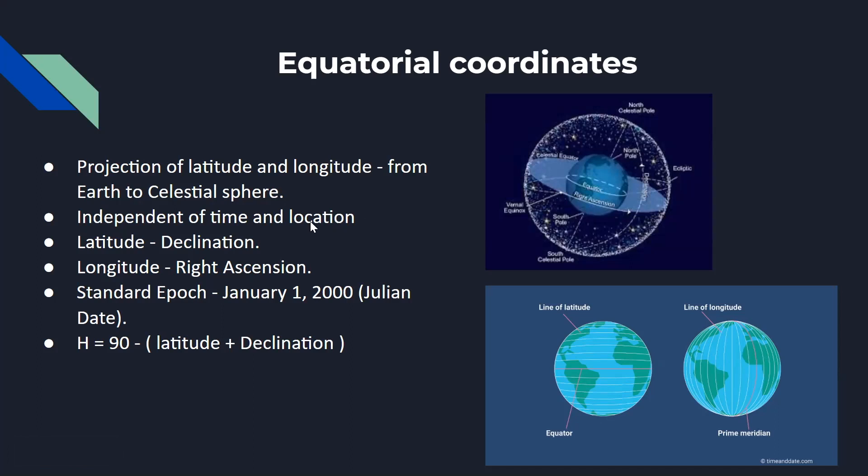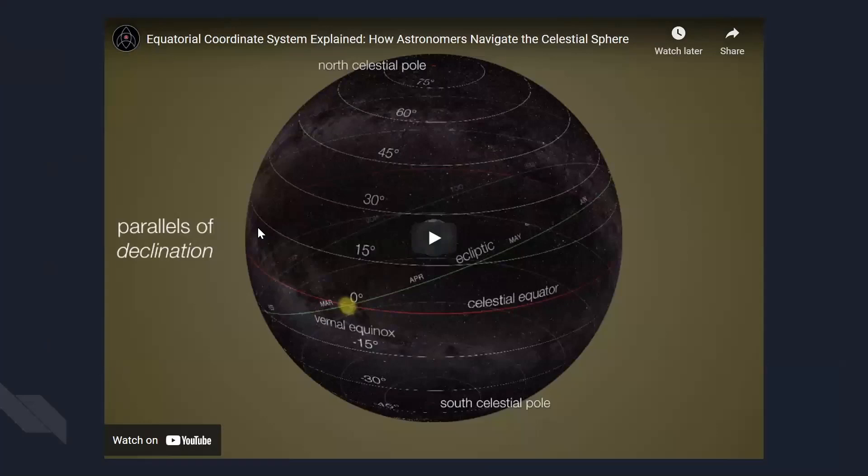So what's special about equatorial coordinate system is it is independent of time and location. We all know that time and location both are interconnected. And in order to find any location, we need time because based on the location, the time will be changing. But in equatorial coordinate system, it is independent of time. So let me show you a video where they'll be explaining how the declination and right ascension have been marked.